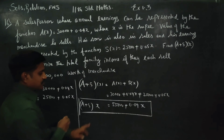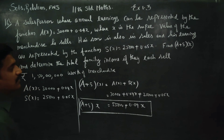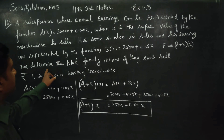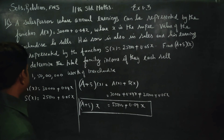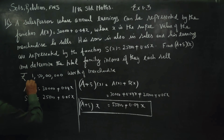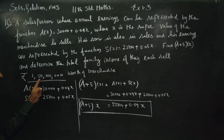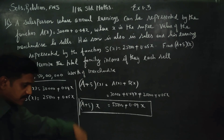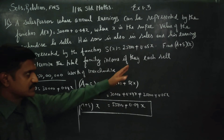This is A plus S of x — the combined family income function. Now, determine the family income if each person sells merchandise worth 1 crore 50 lakhs (1,50,00,000) each.